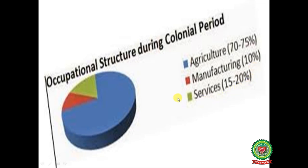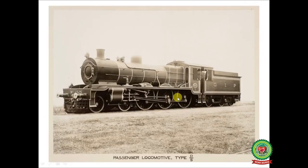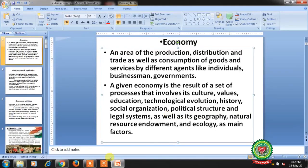Due to the decaying of the handicraft industry, most of the population became dependent on the agriculture sector, and mass poverty, malnutrition, and ill health were the problems faced by the Indian economy. The occupational structure during the colonial rule showed: agriculture sector's contribution to national income was 70–75%, manufacturing sector 10%, and service sector 15–20%. Development of railways during the British rule was beneficial to the Indian economy to a little extent.